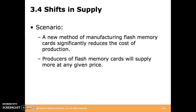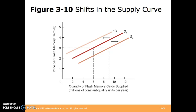Supply curves shift similarly to demand curves. For instance, a new method of manufacturing flash memory cards that significantly reduces the cost of production means producers will supply more at any given price, shifting the supply curve. A supply shift outward from S1 to S2 means supply is increasing at any given price; a shift inward from S1 to S3 means supply is decreasing at any given price.